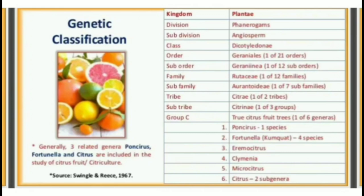The genera are: number one, Poncella; number two, Fortunilla; number three, Aramocitrus; number four, Plymenia; number five, Microcitrus; number six, Citrus.